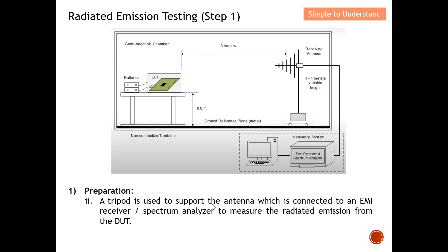A tripod is used to support the antenna, which is connected to an EMI receiver or spectrum analyzer to measure the Radiated Emission from the DUT. There will typically be a switch to select between connecting to the EMI receiver or the spectrum analyzer. This set of equipment is mainly used to measure and quantify the radiated emission from the EUT.